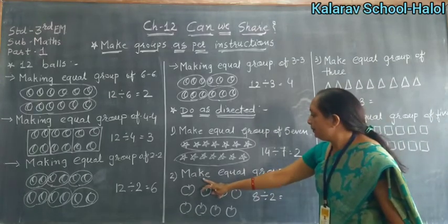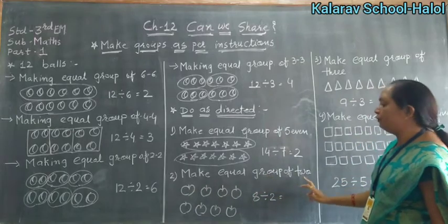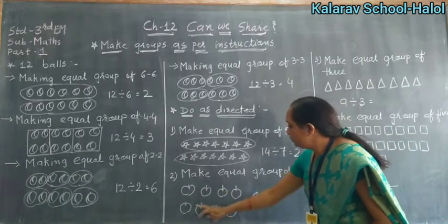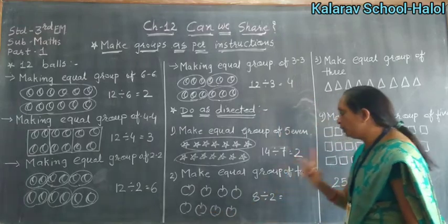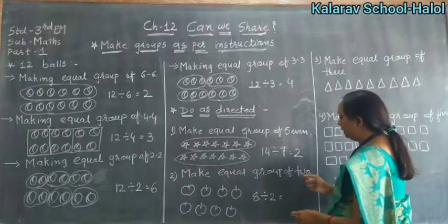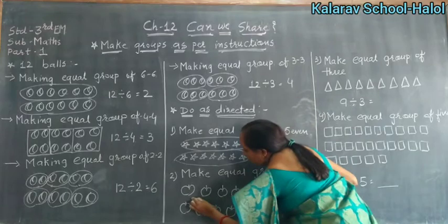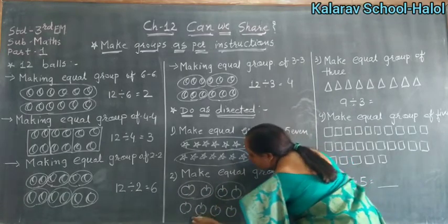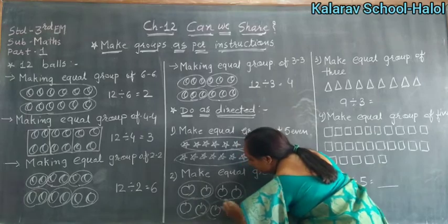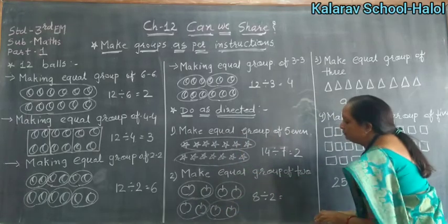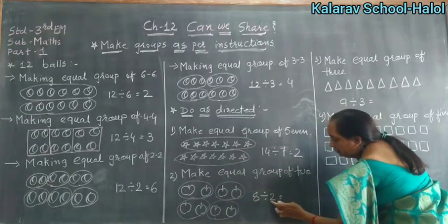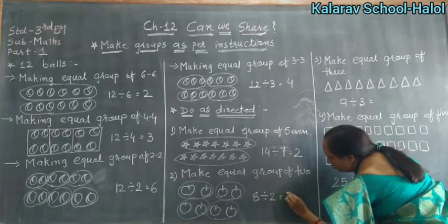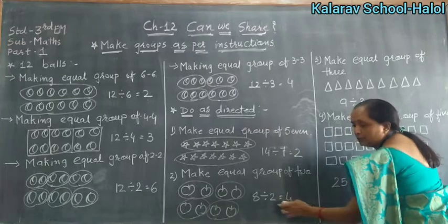Now second number. Make equal group of 2. Total apple: 1, 2, 3, 4, 5, 6, 7, 8 — total 8. And now we make group of 2: 1 group, then we have 2 groups, then 3 and 4. So here total 8, group of 2, and how many groups we make? 4 groups. 2 times 4 is 8.